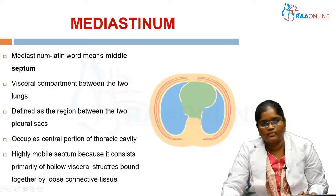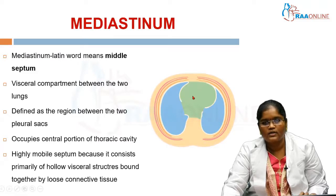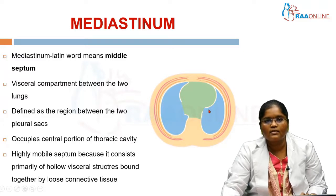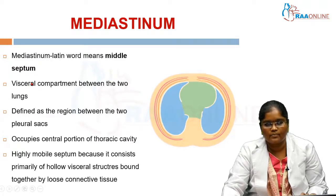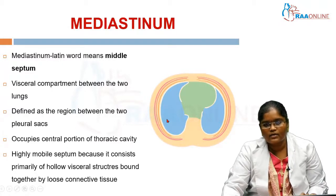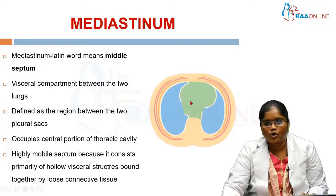So what is mediastinum? The mediastinum is defined as the region between the two pleural sacs. Mediastinum is a Latin word which means the middle septum. It is a visceral compartment between the two lungs. It occupies the central portion of the thoracic cavity. In a cadaver it appears as if it is a rigid compartment, but actually it is not rigid — it is a highly mobile septum because it contains primarily hollow visceral structures which are bound together by loose connective tissue.